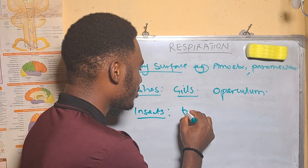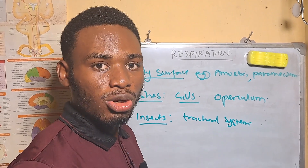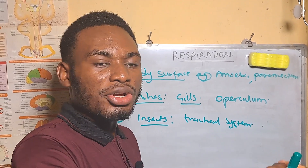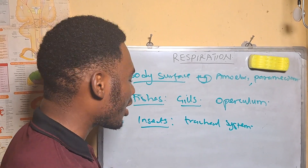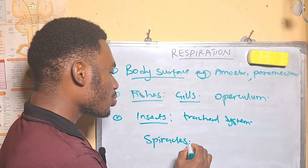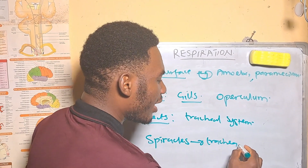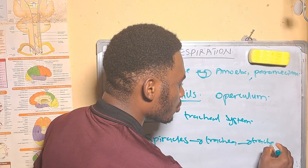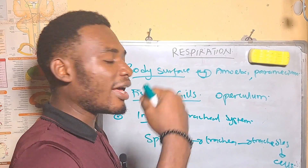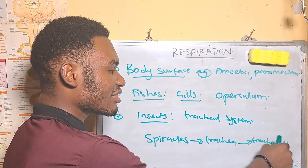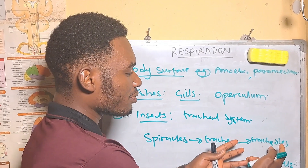For insects, the organ they use to respire is the tracheal system. Expansions of the thorax and abdomen draw in oxygen through openings called spiracles. The spiracles transfer air to the trachea, which branches into tracheoles that supply air directly to the cells.